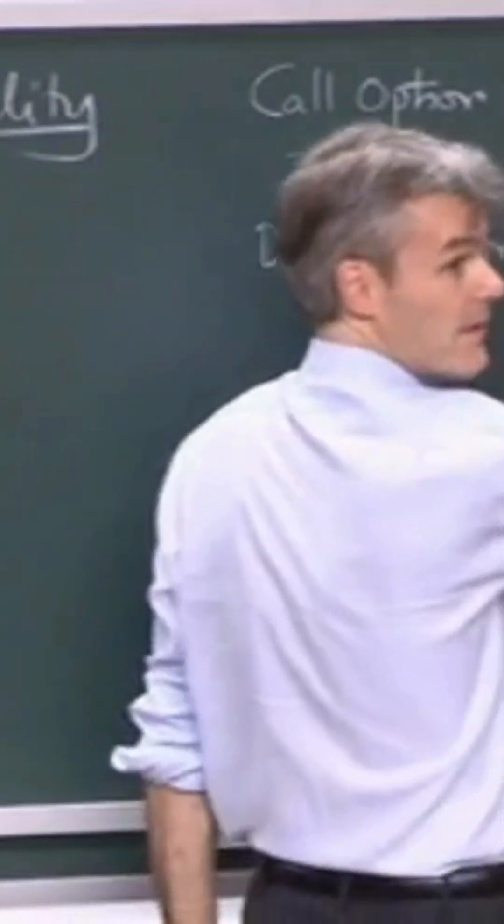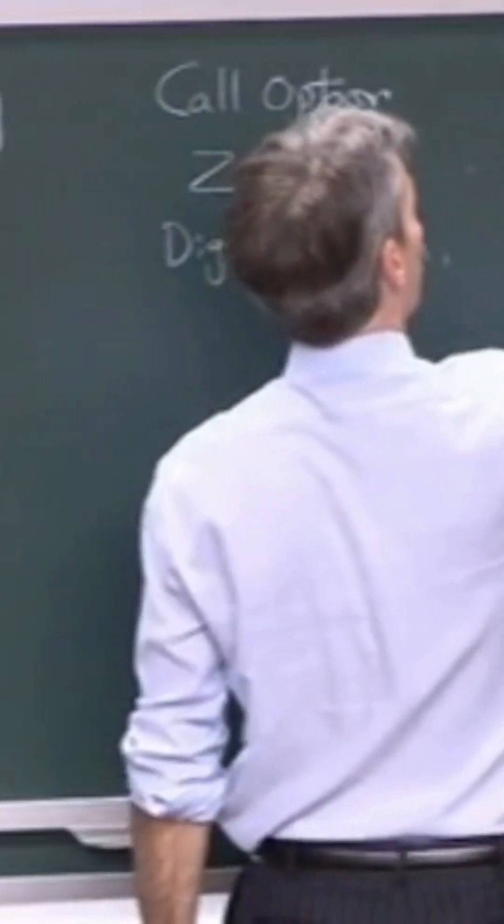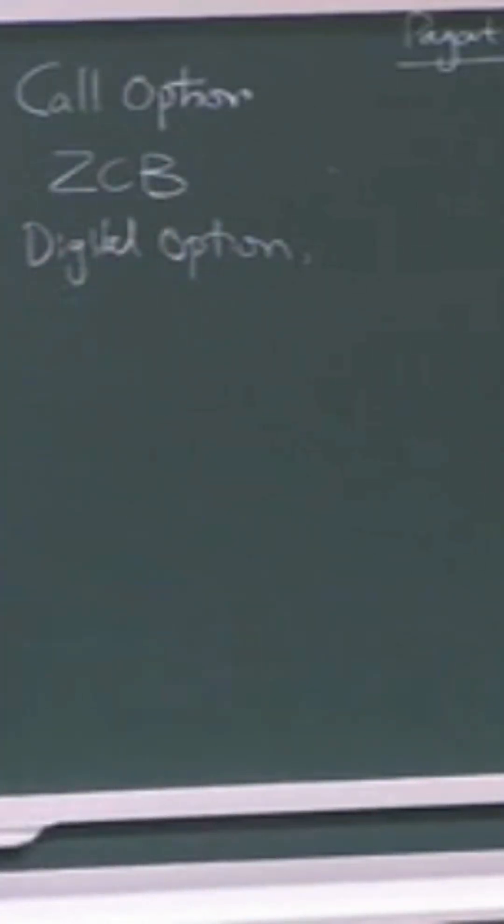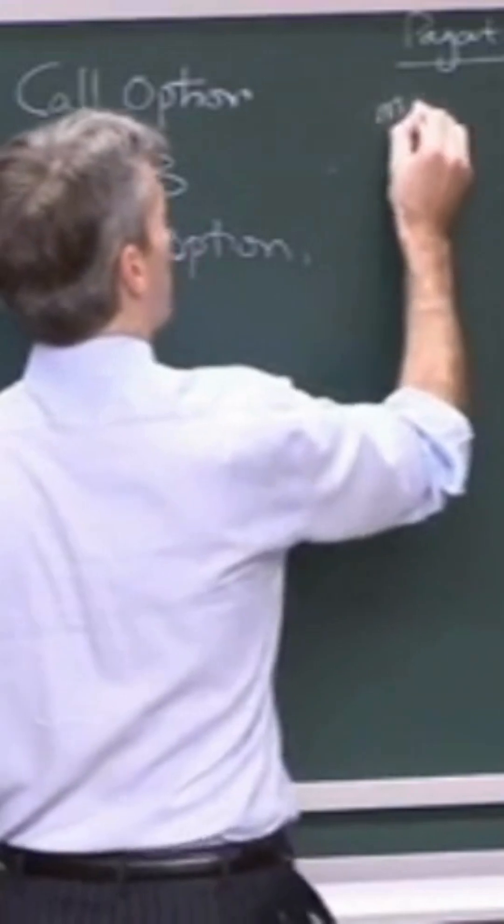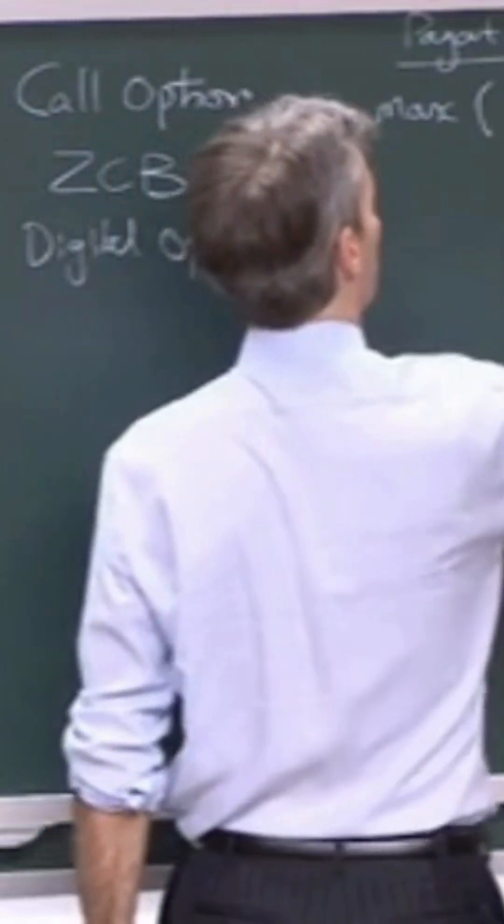So we know that the call option has payout at T. T is some fixed time in the future. This is simply the max of S,T minus K and 0.